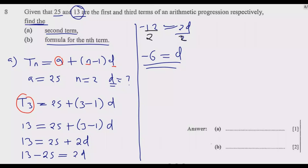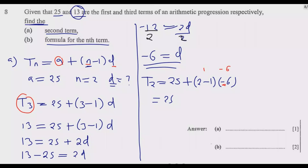Now that we know d, we can find the second term: t₂ = 25 + (2 − 1) × (−6). Simplifying: 2 − 1 is 1, and 1 × (−6) is −6 — you need to be careful with that negative, which is why I'm using a different color. So t₂ = 25 − 6 = 19. The second term is 19.